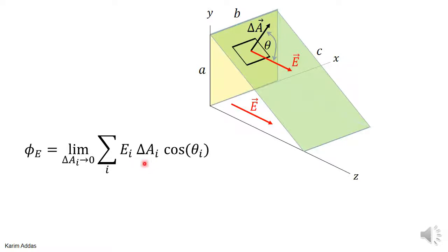This means the magnitude of E times the magnitude of the area vector times cosine of the angle between them. In this problem, the angle theta between the area vector and the electric field is exactly the same for every single area element.